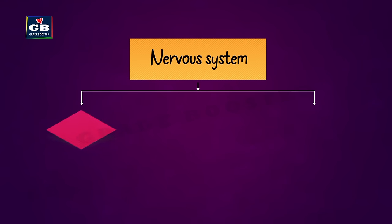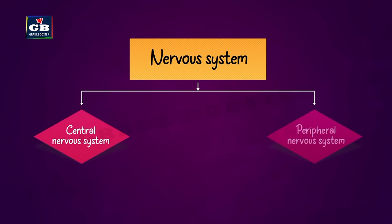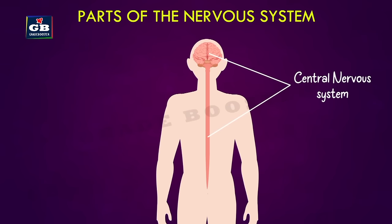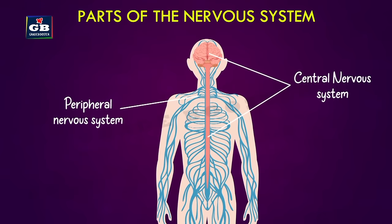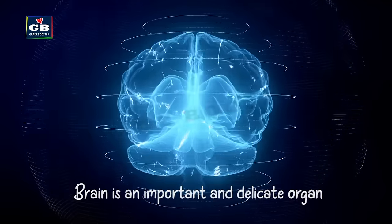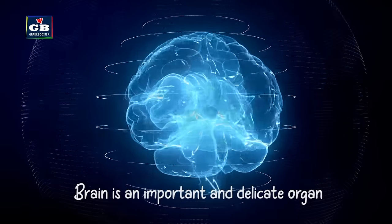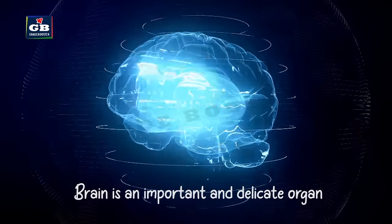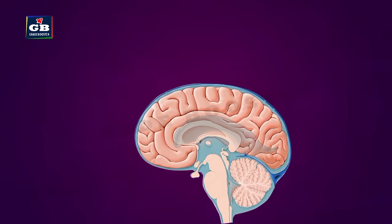The nervous system is divided into the central nervous system and the peripheral nervous system. The central nervous system consists of the brain and spinal cord. The peripheral nervous system consists of nerves. The brain is an important and delicate organ, so it must be well protected.